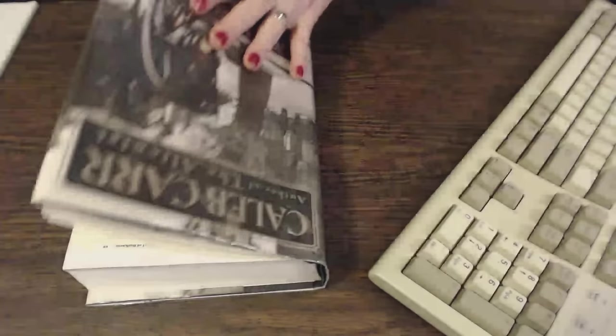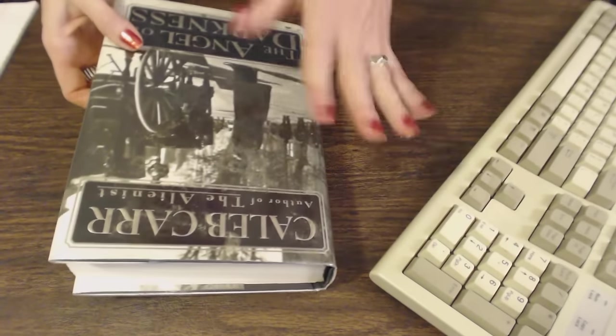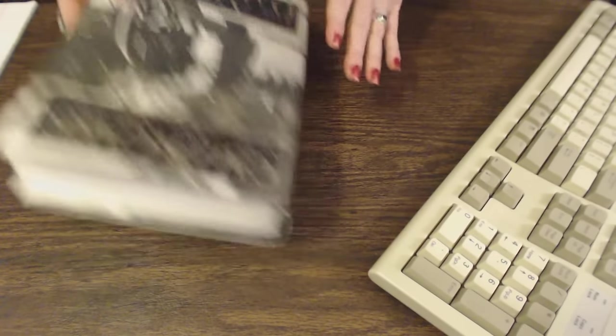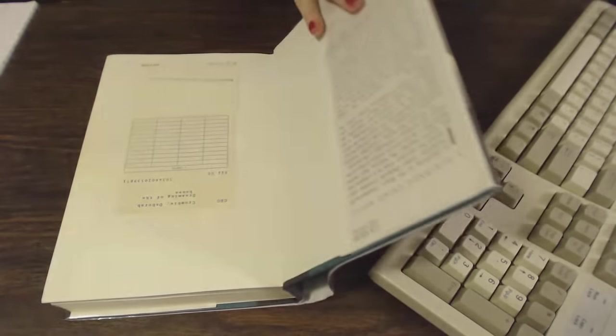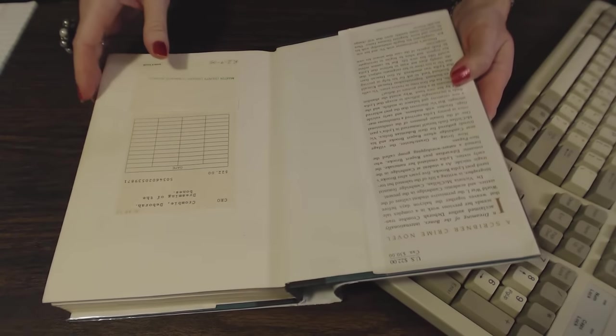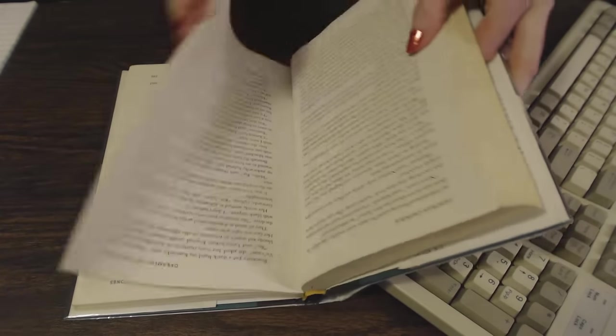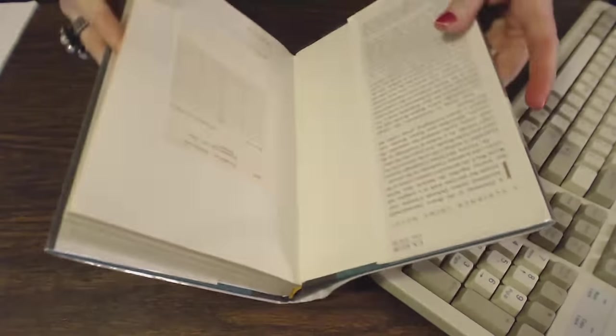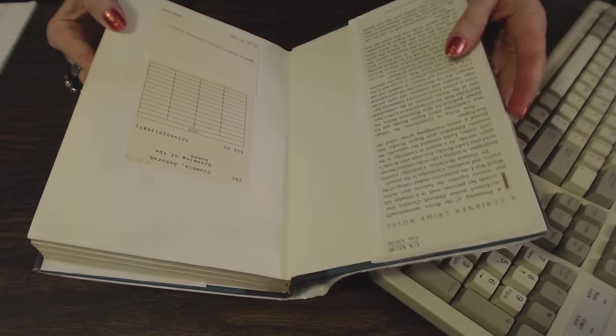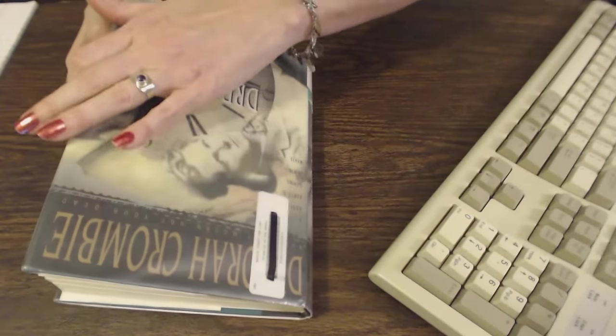So that would be Caleb Carr, The Angel of Darkness. Dreaming of the Bones by Deborah Crombie, this is the one with the spine damage. I'm going to put this one separate because I don't think it's going to go on the cart to go back on the shelf. I think this one will be removed from circulation.